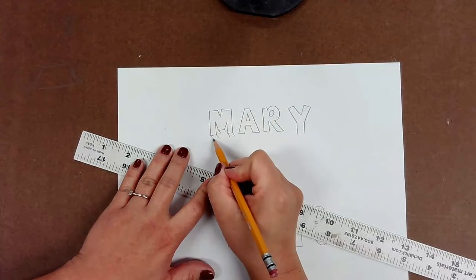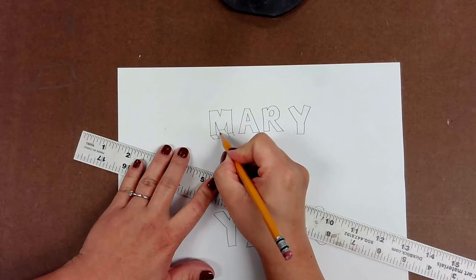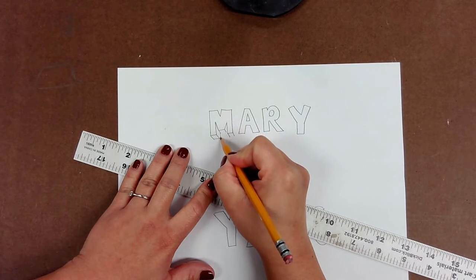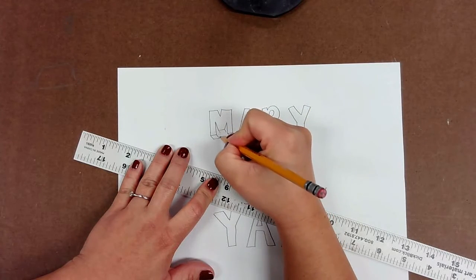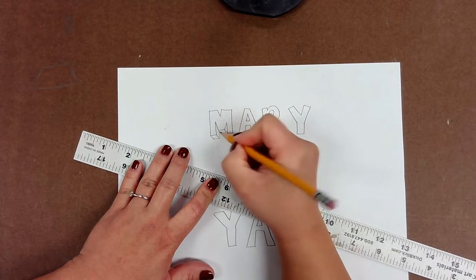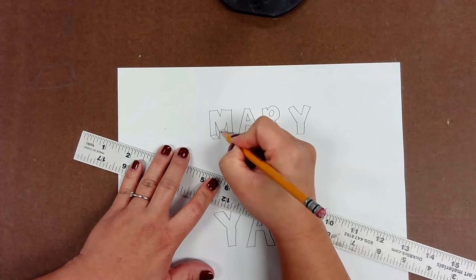Then after you're done extending the lines, you're going to go ahead and connect the lines. And the trick to connecting the lines is that the lines opposite of the new ones that you're drawing should run parallel to the new ones.